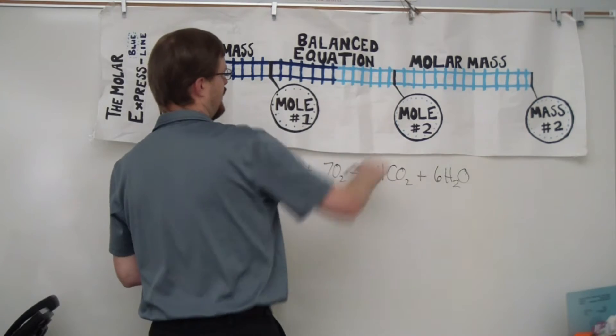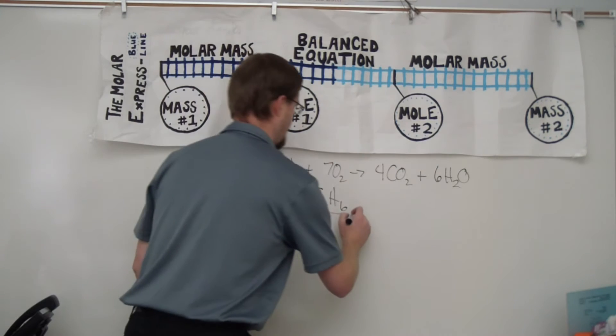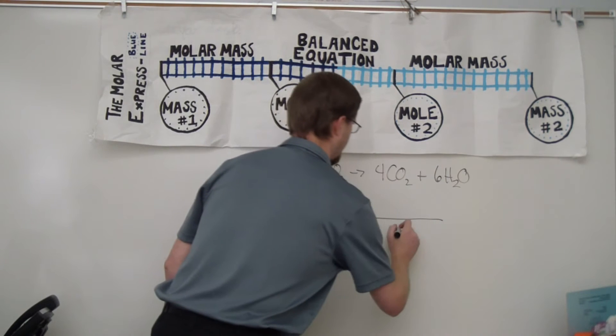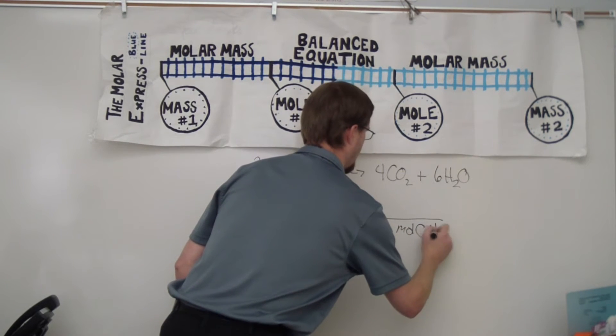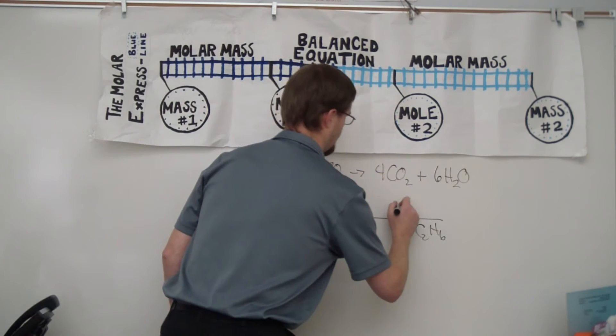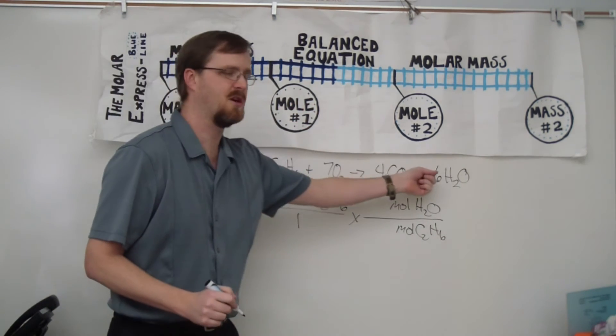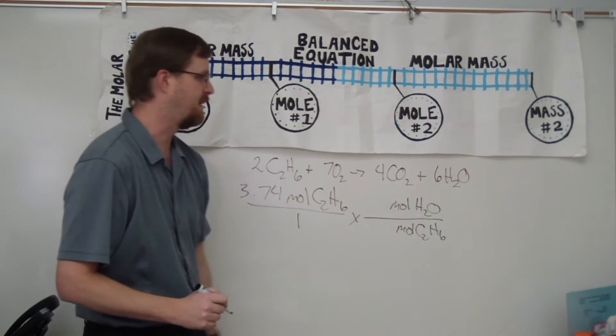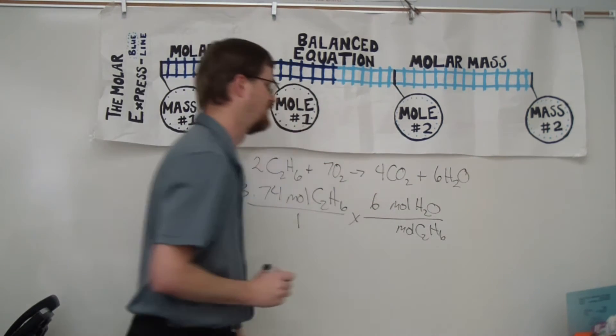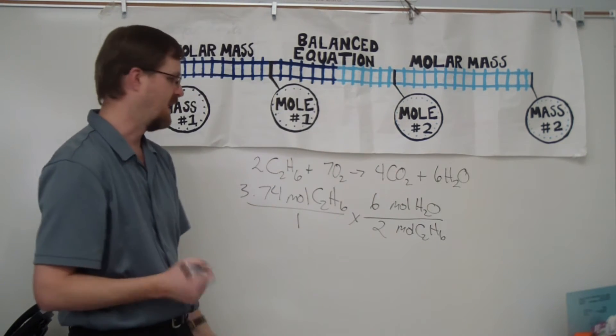So this is a moles one to moles two conversion. So like always, we take our give and we put it over one. And since moles of ethane is on top, we automatically know that it's going to go on the bottom here. And then since I'm looking for moles of water, moles of water will go on top. And then I'm just going to come to my balanced equation here. I'm going to pick out those coefficients, and that's what's going to plug in here. So for moles of water, you can see that there is a six right here. So there are six moles of water, and there are two moles of ethane, like so.